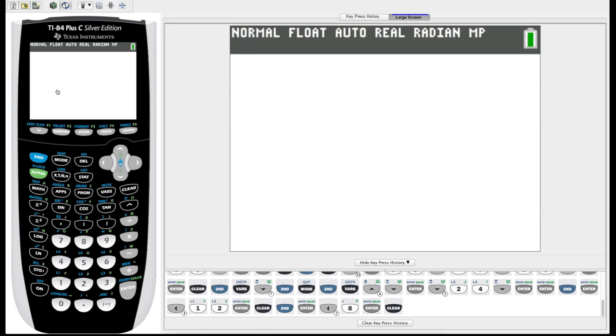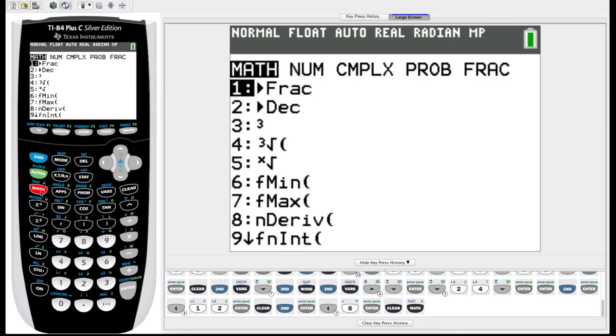There aren't many, but there are two main calculus functions on this calculator. To find them, we start by going to the math button under alpha, and in the first menu for math, we scroll down to where we see number 8 and number 9 for n-deriv and fn-int. That's numerical derivatives and definite integrals.